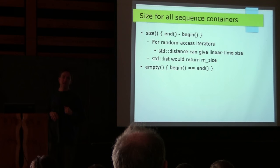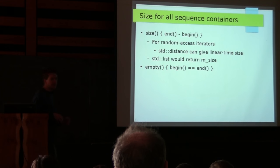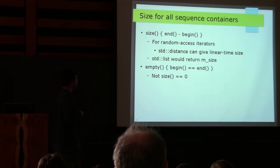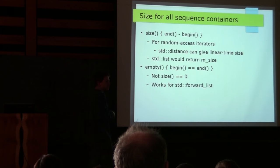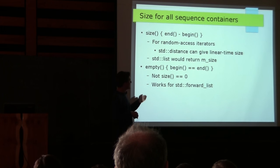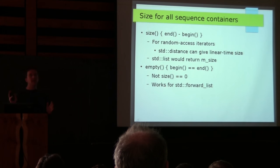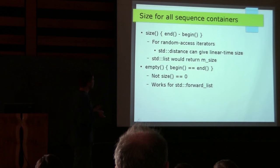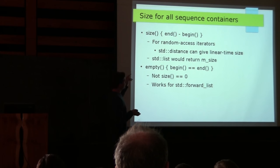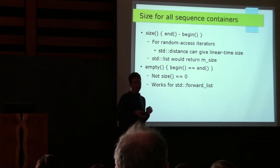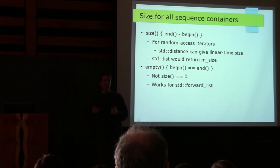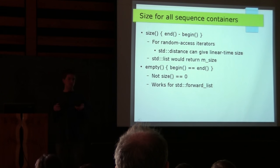Before C++11, std::list's size was unspecified — GCC had a linear-time implementation to allow constant-time splice in more situations. Now with C++11, size must be constant time. So std::list has to have a member variable for size and can't reuse our free-function size — but deque and array can. Empty as 'begin == end' works for forward_list, which doesn't have a size function but does have begin and end that you can compare in constant time. Everything that wants to be container-like operates on the concept of begin and end iterators.